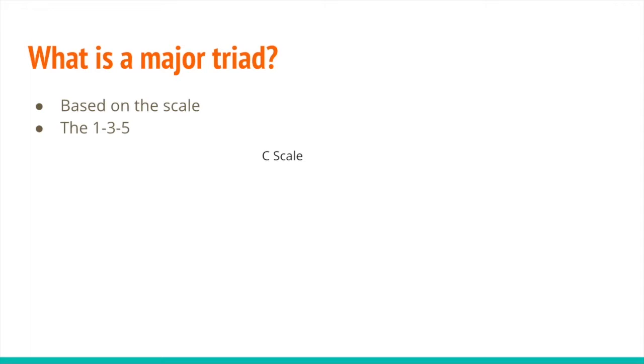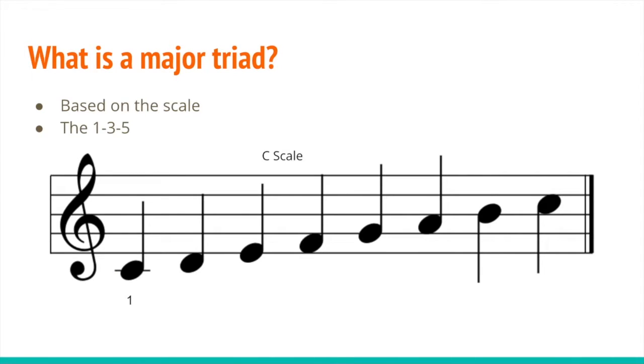In a C scale, you would take the first note C, the third note E, and the fifth note G.